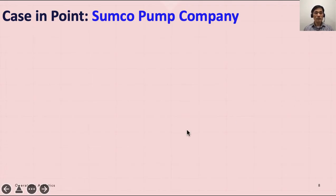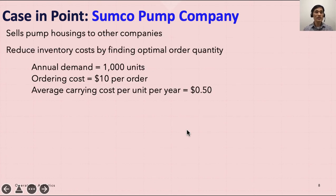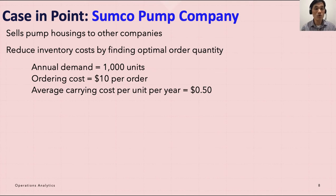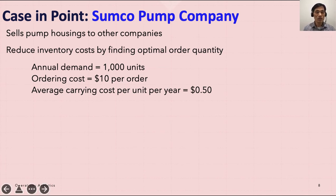Let's solve an example together. Sumco Pump Company sells housings to other companies and wants to reduce inventory costs. After research, the annual demand is 1,000 units, ordering cost is $10 per order, and average carrying cost per unit per year is 50 cents. Using this information, we can find EOQ and total cost.